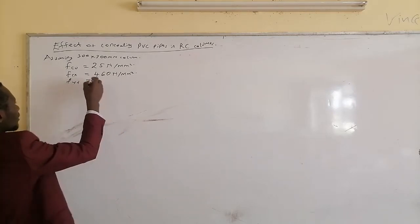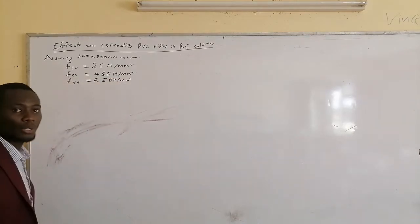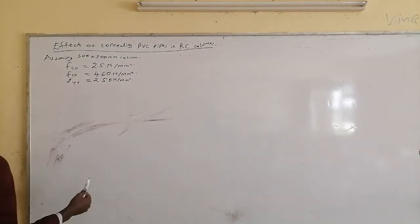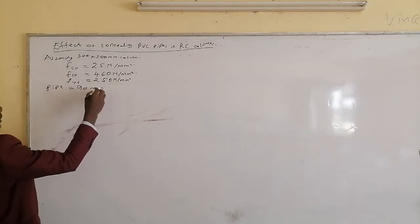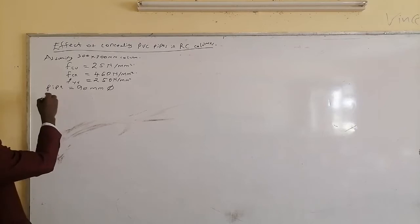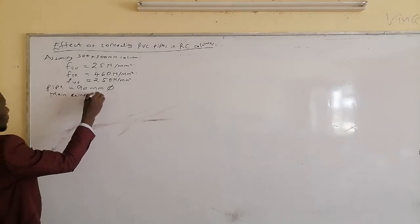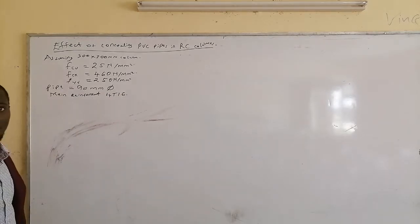For our steel strength, let's use FYK of 460 N/mm². We have main reinforcement of 4Y16. And we have a pipe which is 90 mm in diameter. We are going to carry out a check and determine whether this pipe is going to have an effect on our column.